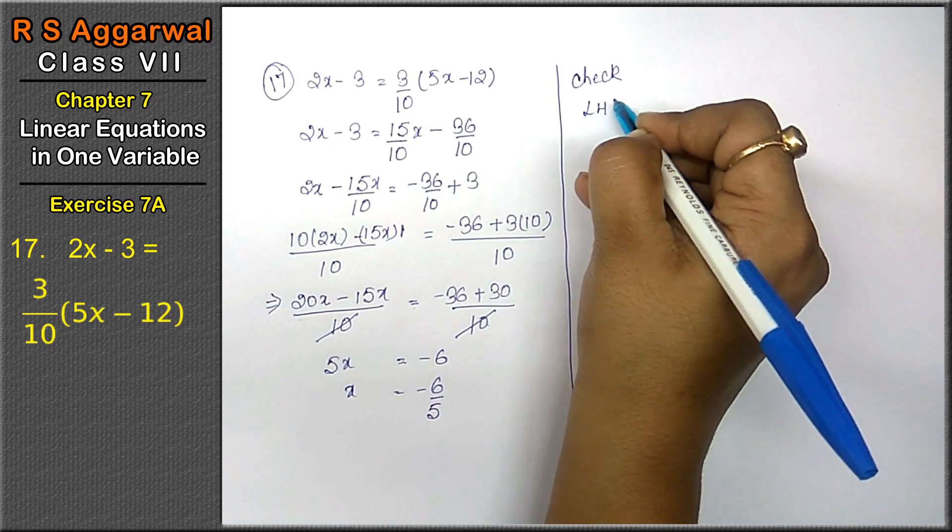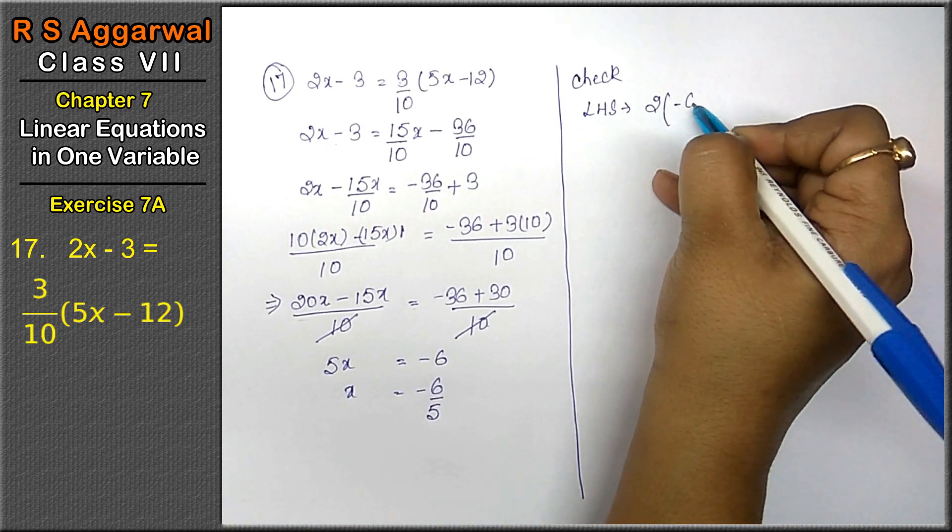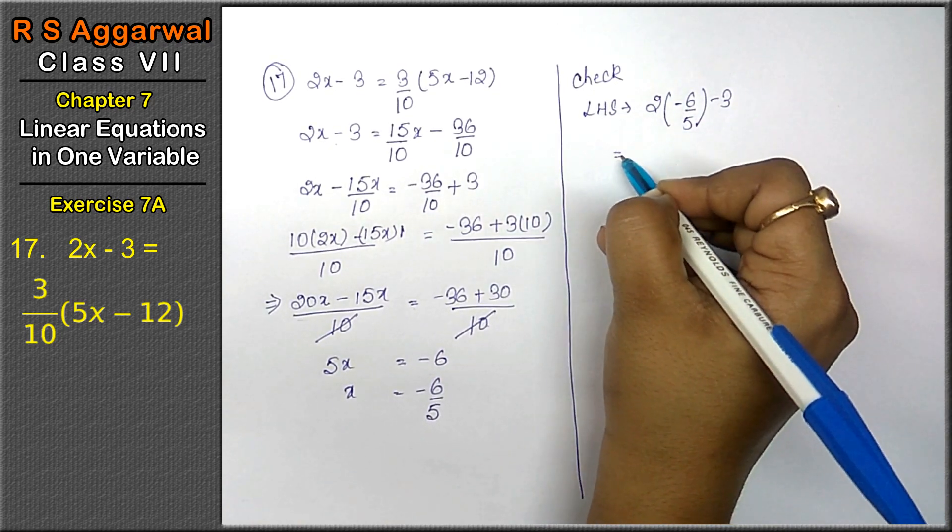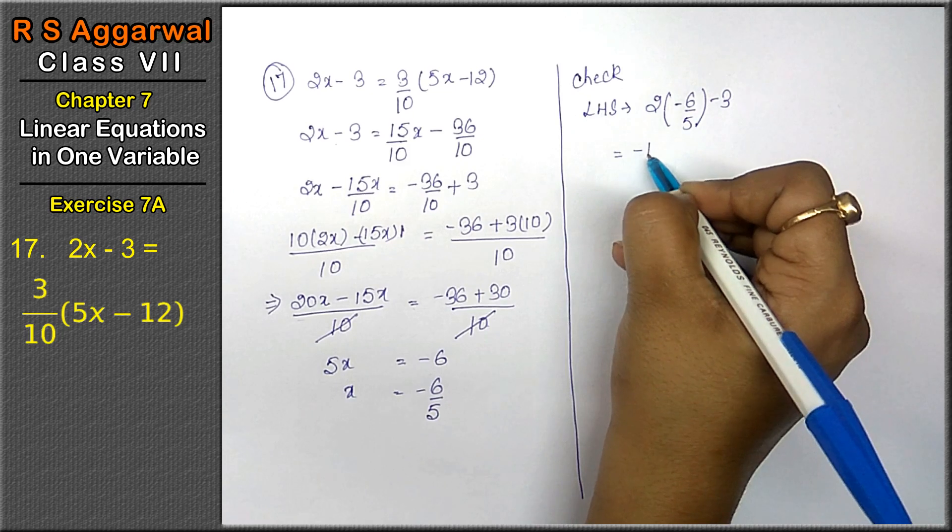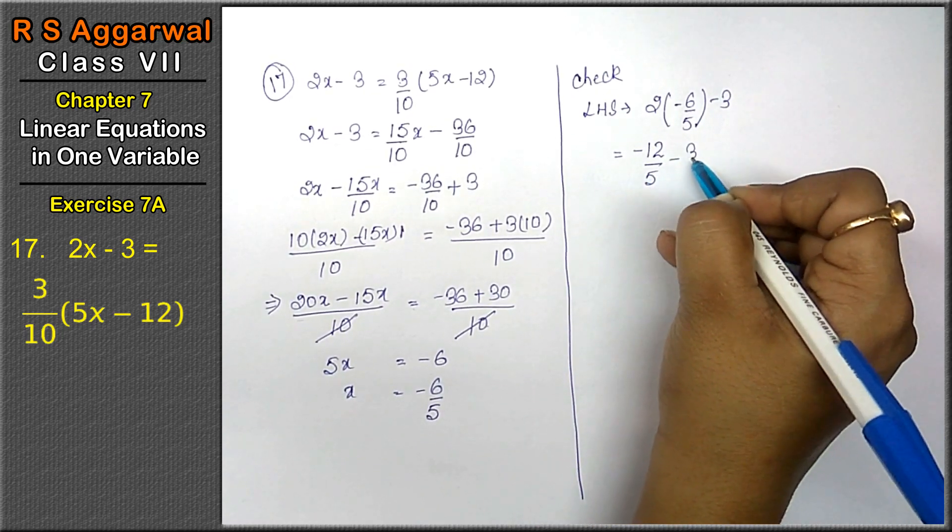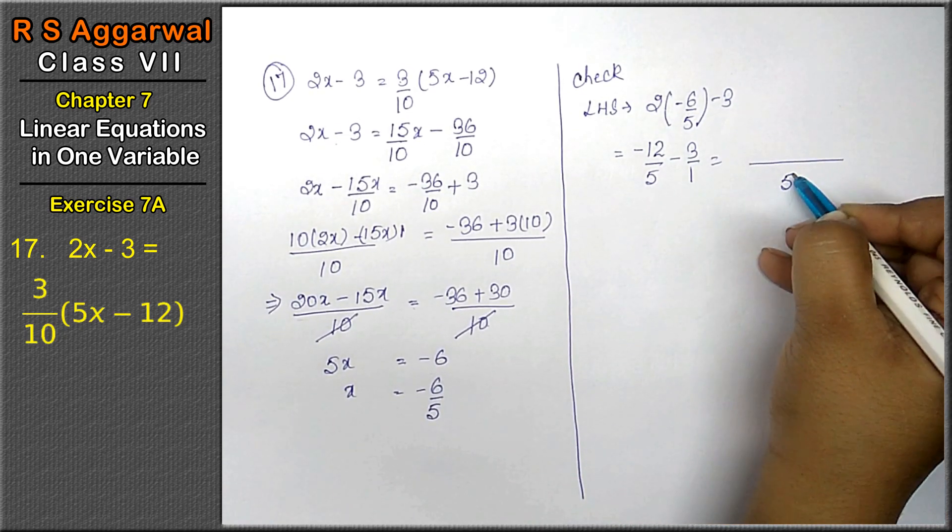Left-hand side. 2 into minus 6 upon 5 minus 3. Now, upper multiplication with upper. Plus minus, minus 2, 6 or 12 upon 5 minus 3. Nothing is written, we'll write 1. 5 is the LCM.